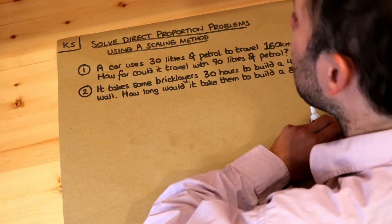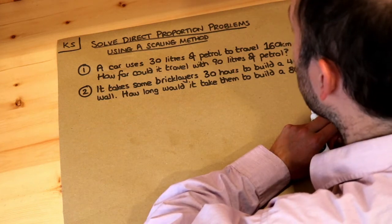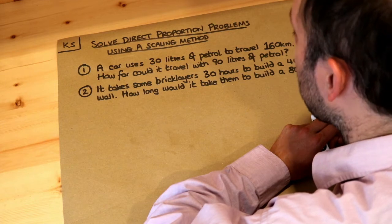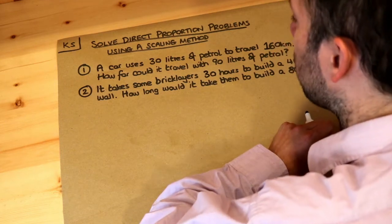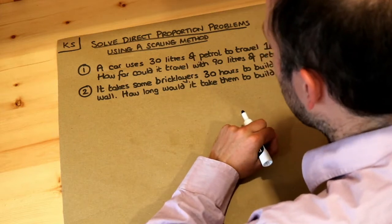Hello and welcome to Dr Ross Mass's key skill video on solving direct proportion problems using a scaling method. Now if two quantities are directly proportional, that means they scale in the same way.